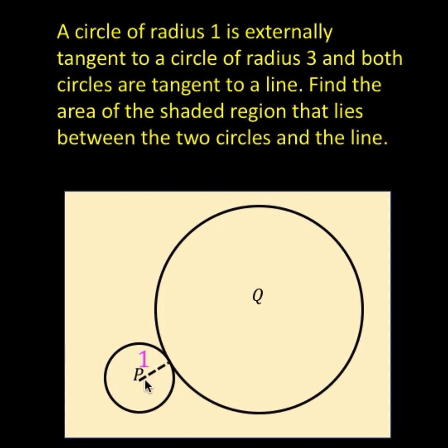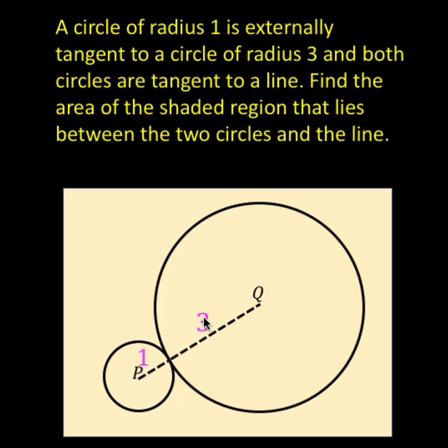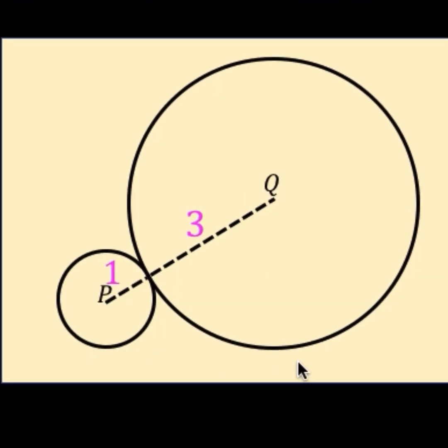So circle P has a radius of 1 unit and circle Q has a radius of 3 units. Both of these circles are tangent to this blue line and we want to know what is the area of the shaded region between the two circles and the blue line.